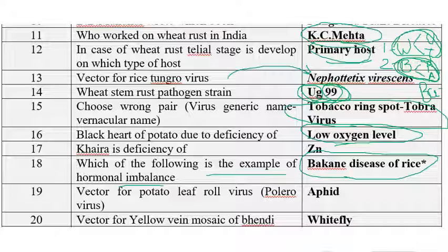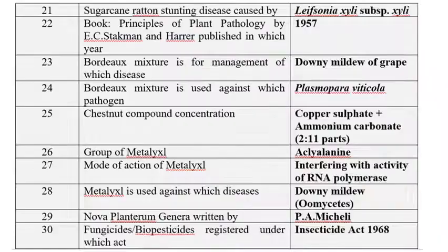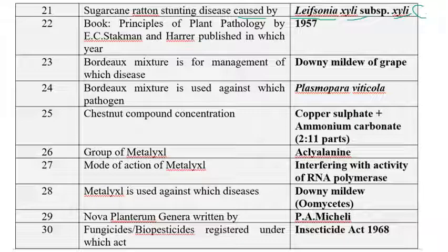The vector for potato leaf roll virus is aphid. The vector for yellow mosaic virus of bhindi is whitefly — yellow mosaic virus of bhindi is transmitted by whitefly. Sugarcane ratoon stunting disease is caused by Leifsonia xyli subsp. xyli, whereas the previous name is Clavibacter xyli subsp. xyli.